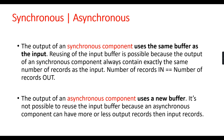In the case of an asynchronous component, the output uses a new buffer because you cannot reuse the same input buffer when the number of records changes. The best example is Aggregate: you may get 100 records in, but the output can be 10 or 20 records. The asynchronous component can have more or less output records than the input, so the same buffer cannot be reused.